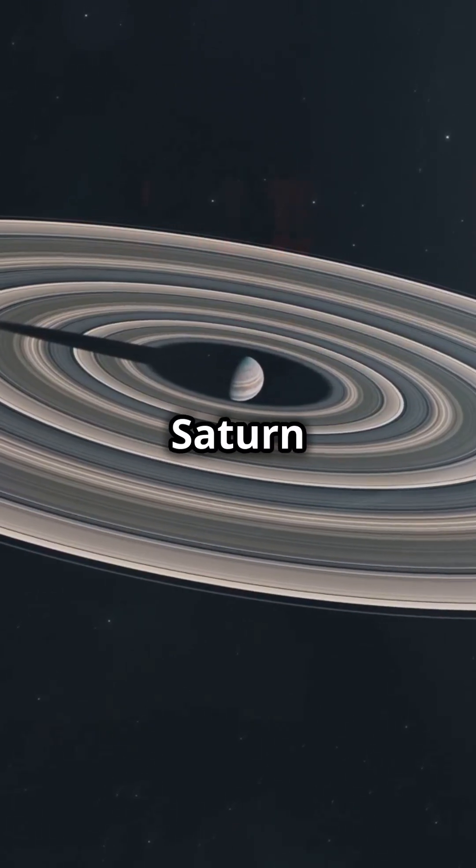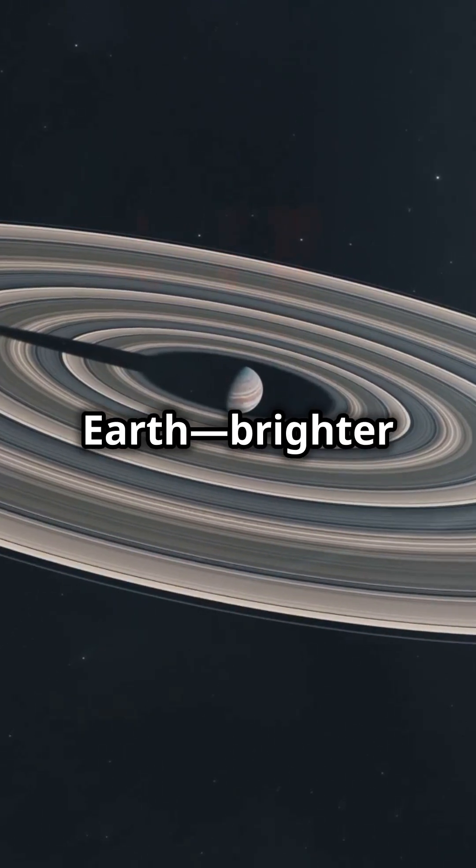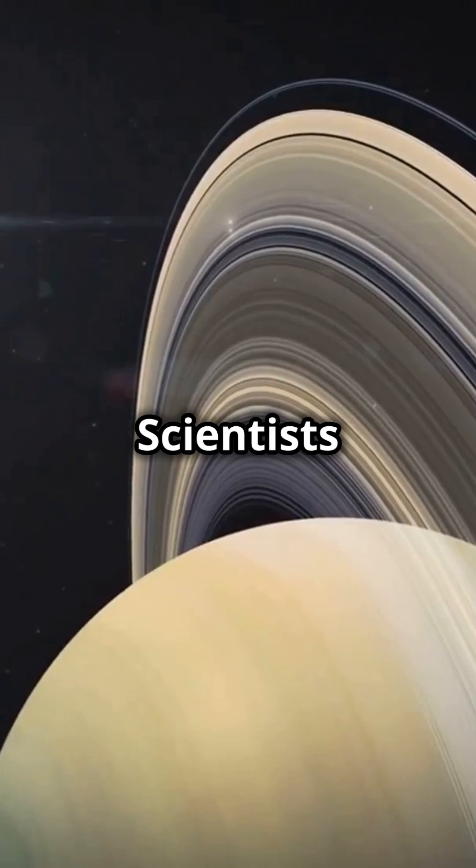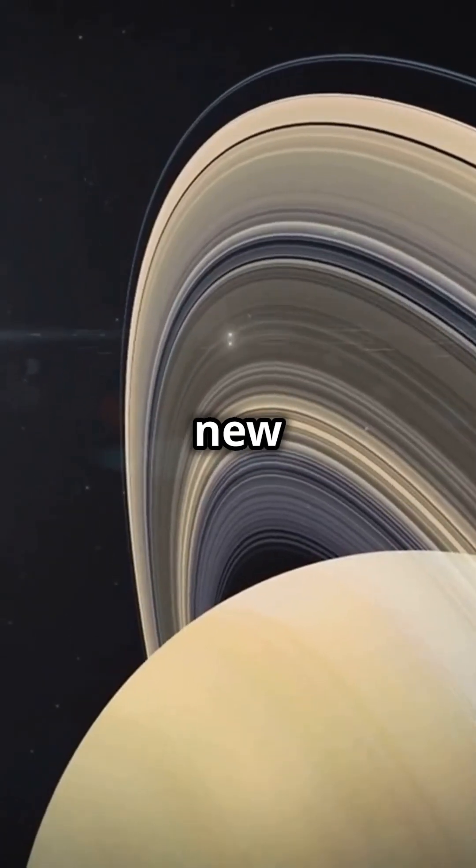If it replaced Saturn in our solar system, its rings would be visible from Earth, brighter than a full moon. Scientists think these rings might even be forming new moons right now.